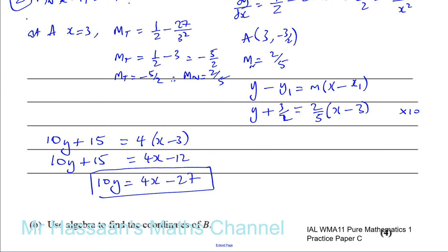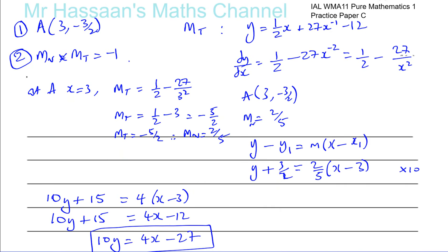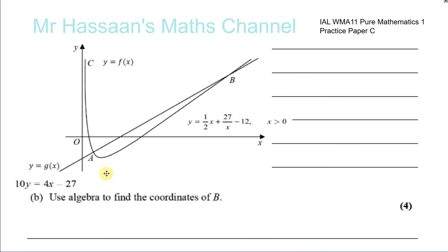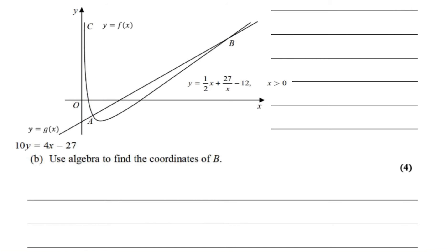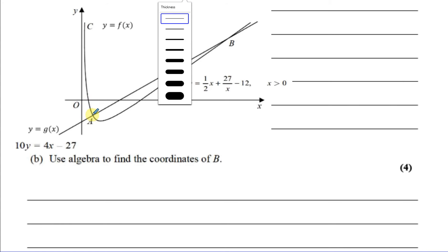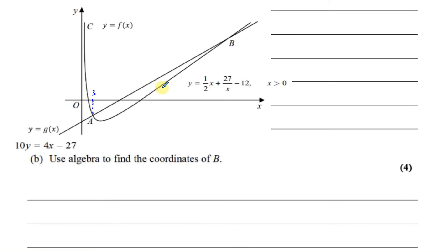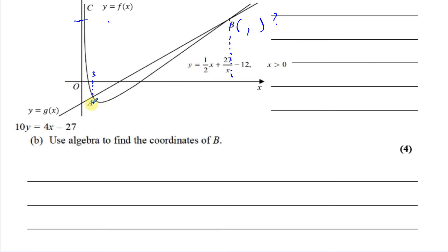For part b, we're asked to use algebra to find the coordinates of B, the point where the normal — with equation 10y equals 4x minus 27 — meets the curve a second time. The curve already meets the normal at point A with coordinates (3, -3/2); we need to find the other intersection point.